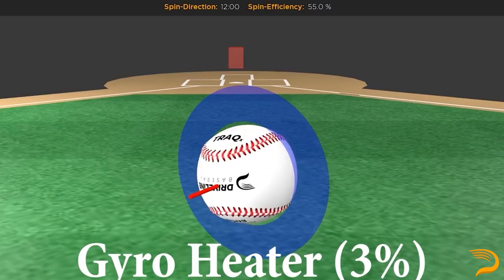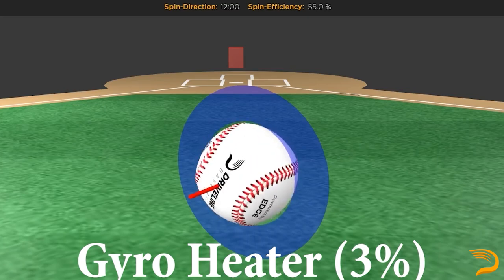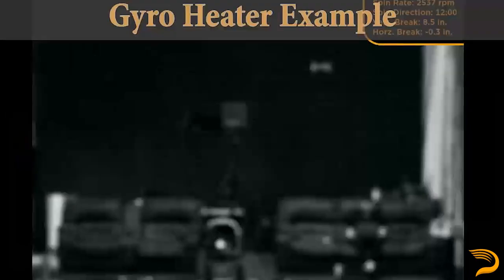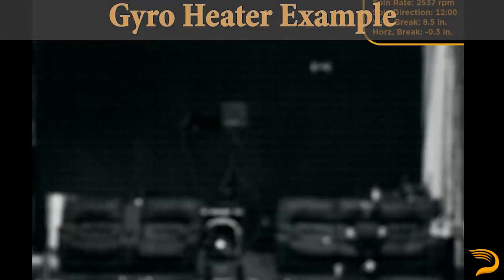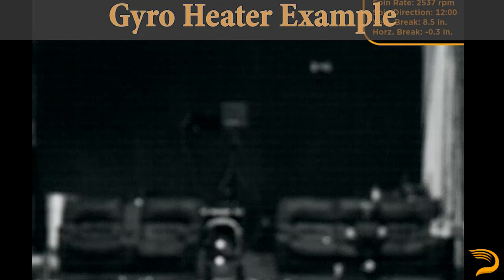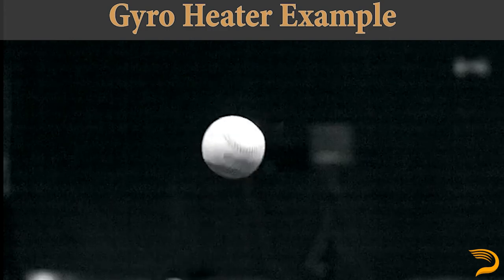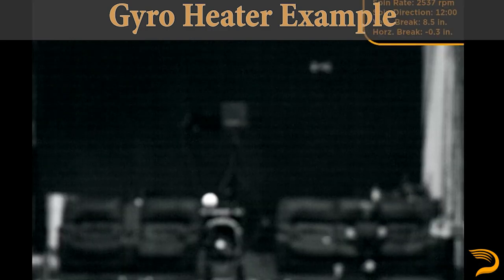We will next transition to our cut or more gyroscopic type heaters, starting with the gyro fastball. This pitch has rarely been thrown, coming in with just 3% usage league-wide. This is essentially the same movement profile as a gyro cutter, though it's thrown as a primary offering rather than a pitch to work off a fastball. Garrett Richards is best known for having this offering, with Marcus Stroman and Reds prospect Graham Ashcraft also being rare examples of pitchers who utilize this as a four-seam fastball.